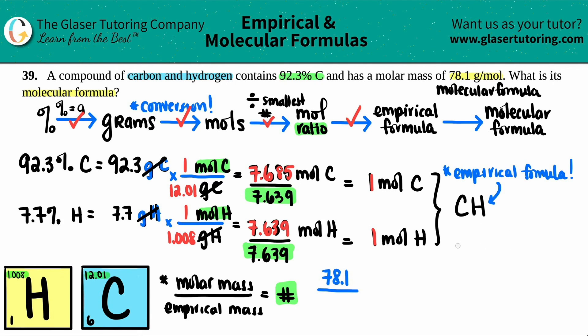So we'll say, down here, the empirical mass for CH would just be 12.01 plus 1.008. I get 13.018 grams per mole. That's the unit if we're taking it from the periodic table. So now I'm just going to take this number and place it right here. So I'm going to get some number. Let's see what it is. 78.1 divided by 13.018.